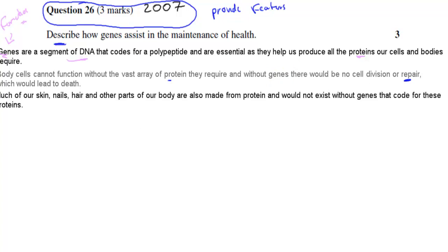The second part was talking about our skin, our nail, our hair, and other parts of our body are made up of protein. Without these genes that code for these proteins we wouldn't have those different types of body proteins and again that would be death as well.